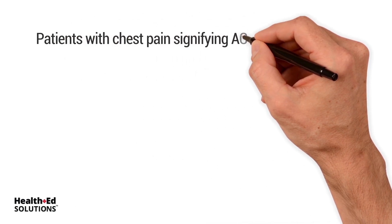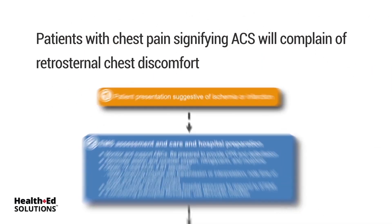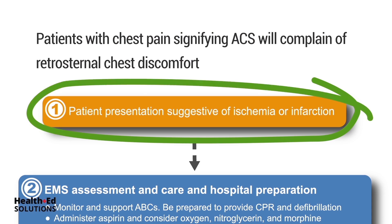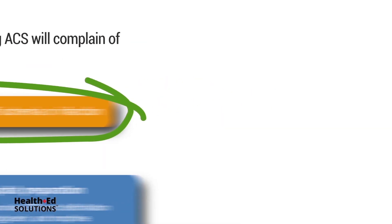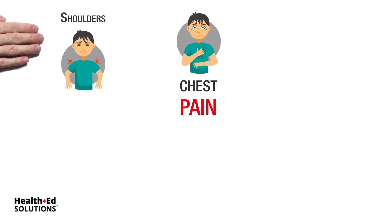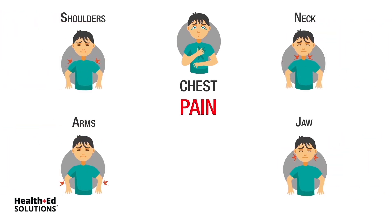Patients with chest pain signifying ACS will complain of retrosternal chest discomfort. Pressure or chest tightness is a common symptom. Pain can radiate to the shoulders, neck, arms, and jaw. Sometimes chest discomfort is felt in the back between the shoulder blades.